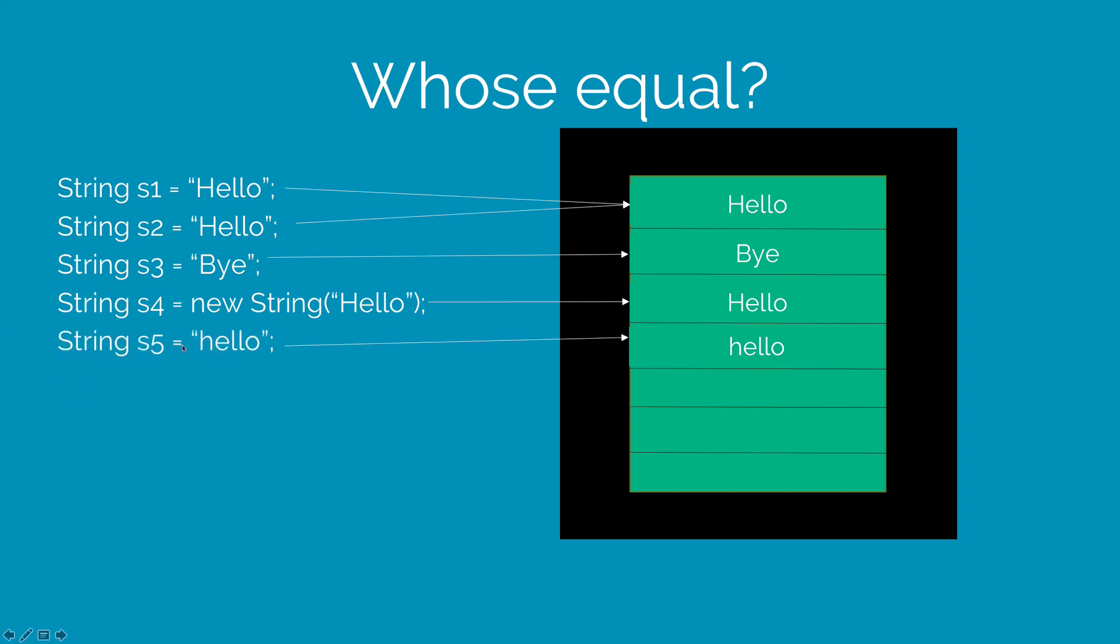Which means I can say s5 equals to hello here. That's going to be a separate piece of text because this is a small H compared to this one which is a capital H. Now let's see who is equal and who is not. So s1 equals equals s2 is true because s1 and s2 are pointing to the same piece of text in memory. If I say s1 equals equals s4, this is going to be false.